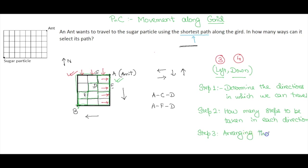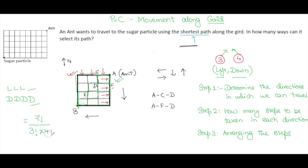Step three is arranging the steps. We have three left steps (L) and four down steps (D). To arrange three L's and four D's, the total number of arrangements equals 7! divided by (3! × 4!). We already know how to arrange letters, and treating each step as a letter, we apply the same formula to calculate the number of shortest paths along the grid.